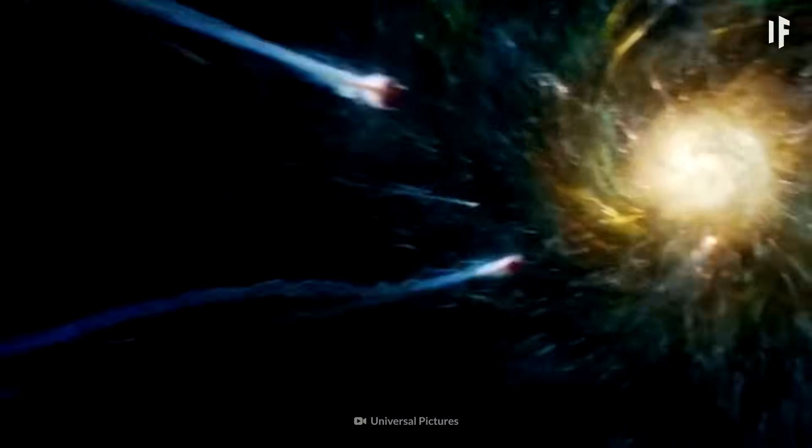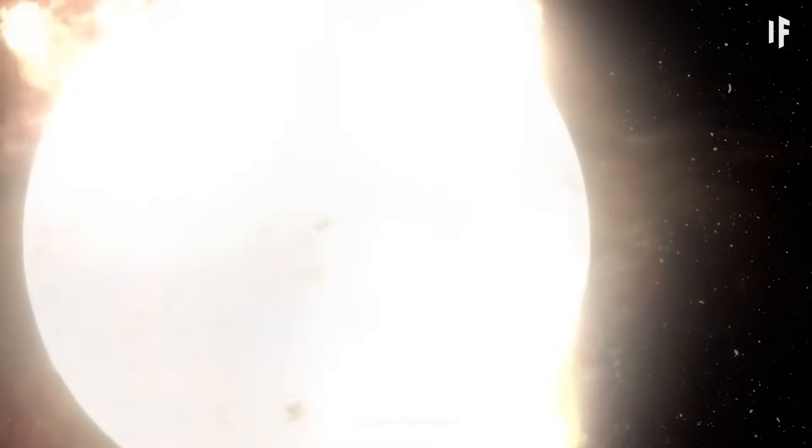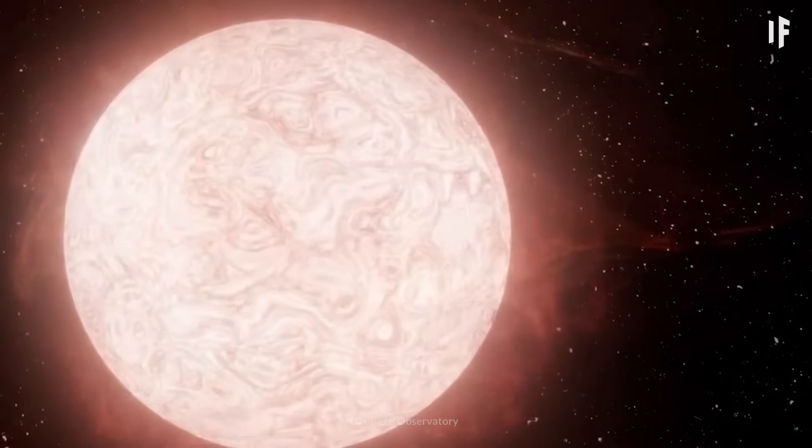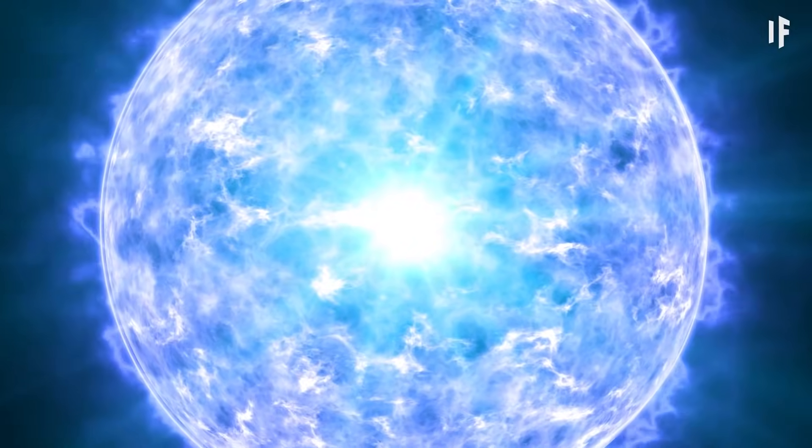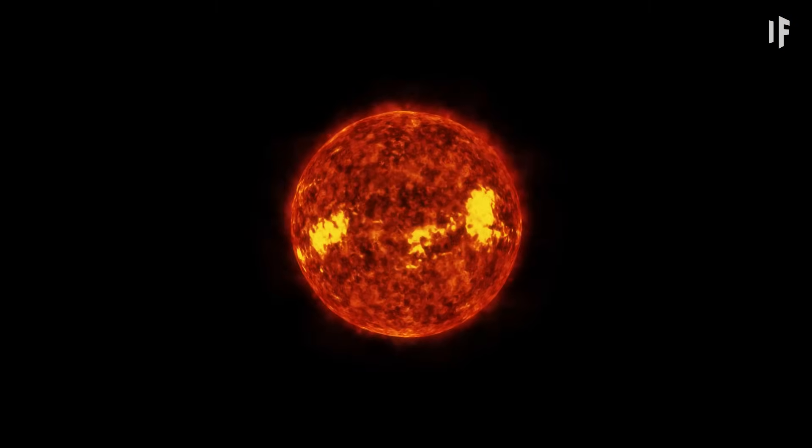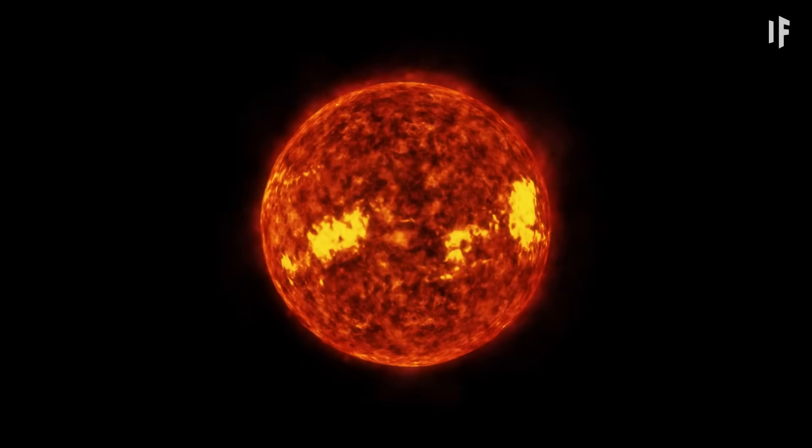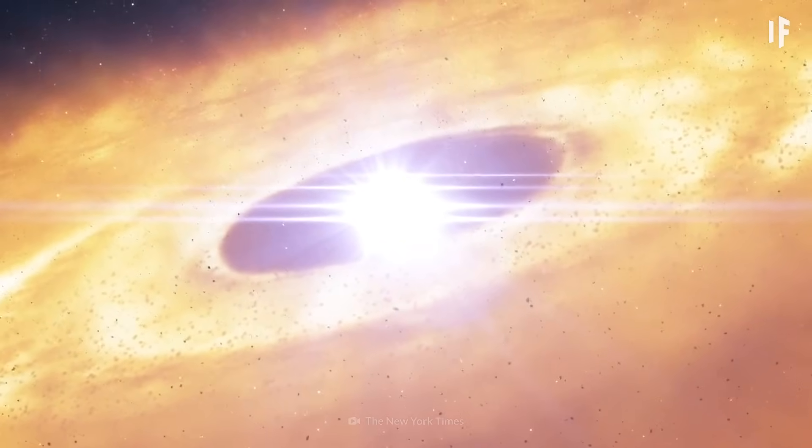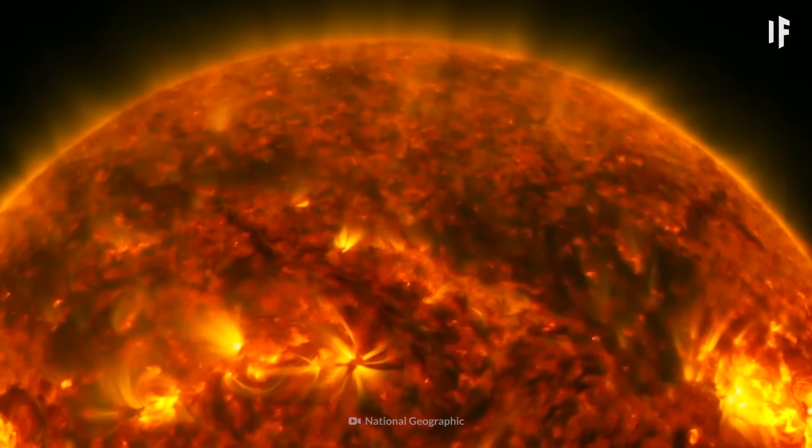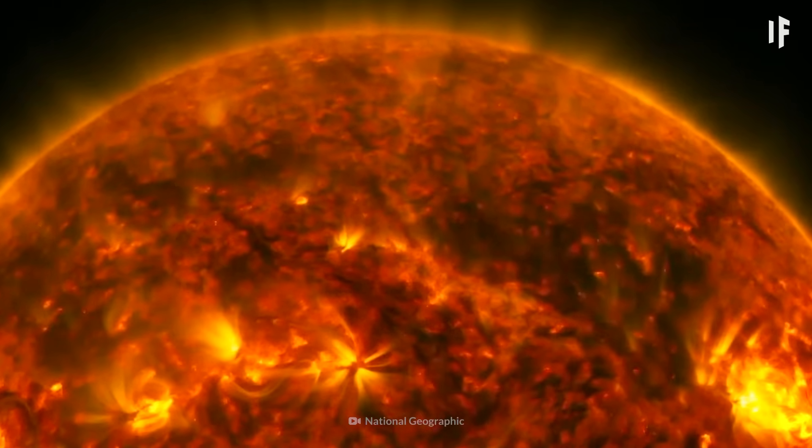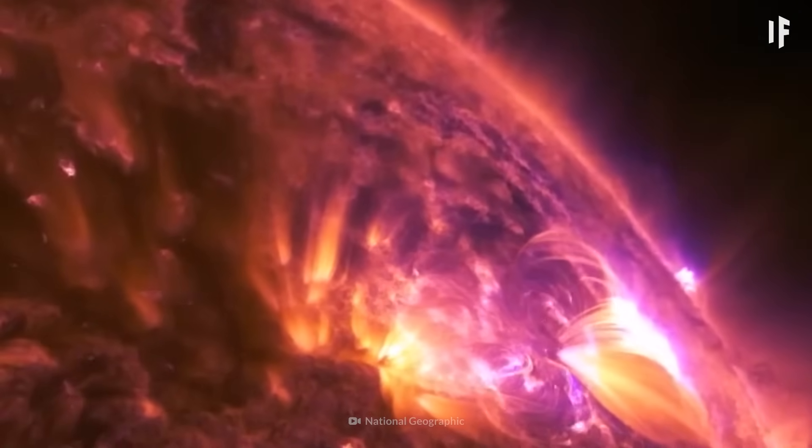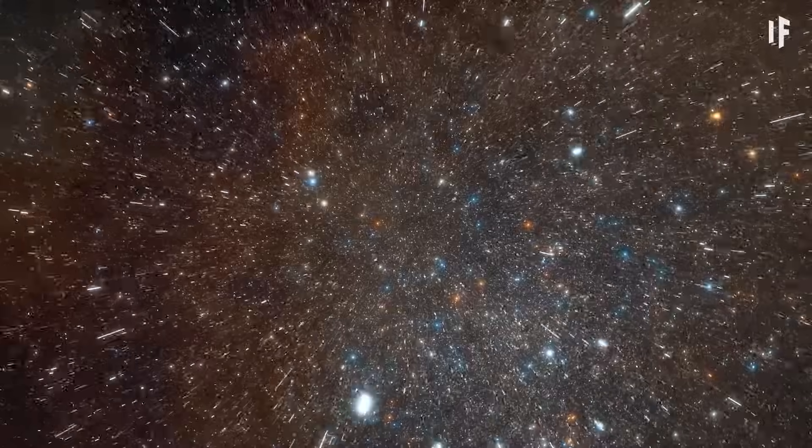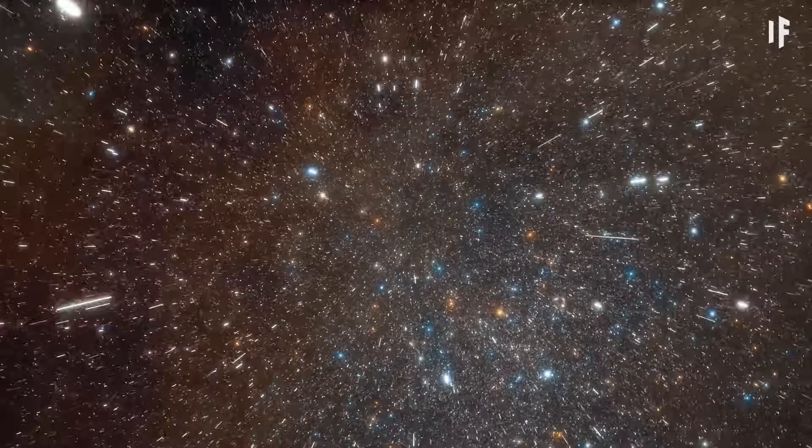And not all these stars are identical. As they're born, they'll form into different shapes and sizes. Some will be massive blue giants, while others will be smaller red dwarfs. And it's not just their size that's different. Stars have different lifespans, too. Some live for tens of millions of years, while others live for trillions. And as we've been observing these stars, something fascinating has been happening.